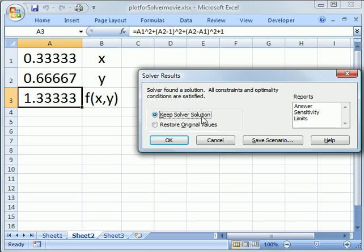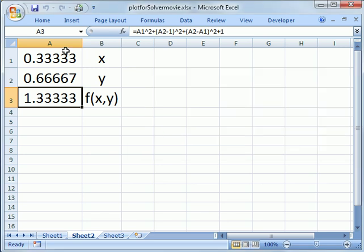So we'll say we like this, it worked. We'll keep the Solver solution instead of restoring our original values. We just say okay. So the minimum is at one-third, two-thirds, and the function evaluates out to one and a third, and that's our minimum value.